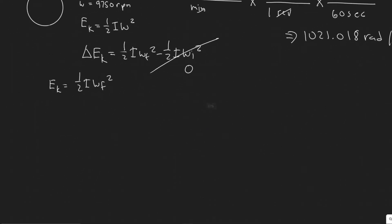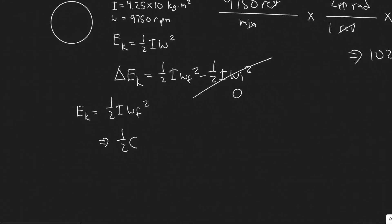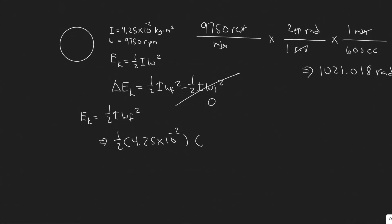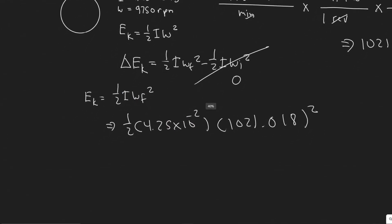Now we have it in the correct units, so it's a matter of plugging it in. We have one-half times the inertia, which is 4.25 × 10⁻² times 1,021.018 squared. We're just plugging in our angular velocity omega and our inertia. Now that they're in the correct units, we calculate 0.5 times each of these values.